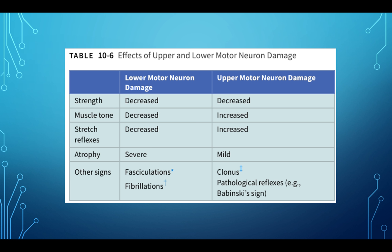Comparing upper versus lower motor neuron damage: lower motor neuron damage shows decreased strength, decreased muscle tone, decreased reflexes, atrophy, and fasciculations. Upper motor neuron or cortical damage shows decreased strength but increased flexor tone and spastic reflexes; they'll have tone initially but may develop atrophy over time. You'll also see clonus and pathological reflexes like Babinski, where scratching the bottom of the foot causes the big toe to go up instead of a flexor response.